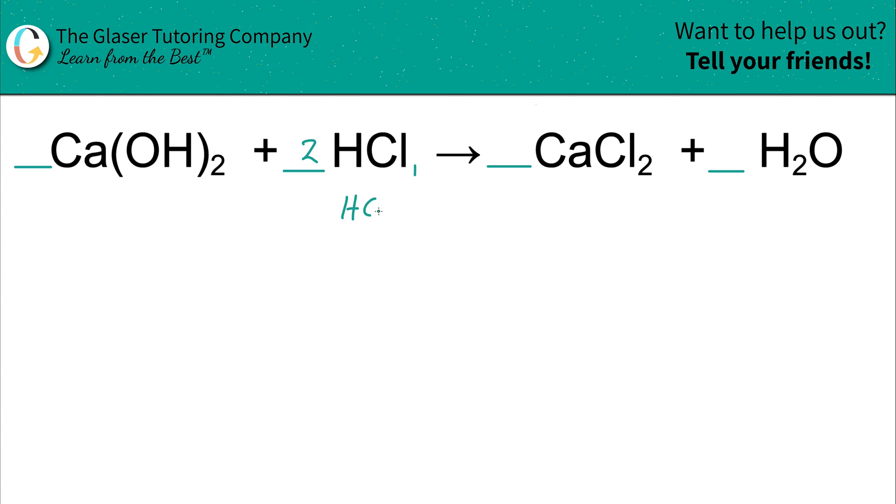Because now that means we have two hydrochloric acids. So if I have two hydrochloric acids, and in each one I had one chlorine, well, that means I'd have two chlorines in total. That's all it is, ladies and gentlemen.